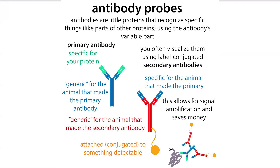This brings us to secondary antibody use. The secondary antibody is going to bind to the primary antibody, and it's actually the secondary antibody that's going to be labeled. This gives you signal amplification — you can have multiple secondary antibodies binding to that same primary antibody, allowing you to have an increase in signal. Whereas if you had a single label on a single primary antibody, you would have just one label per molecule of the thing you were looking for. With a secondary, you can have multiple secondary antibodies per primary antibody, giving you a higher amount of signal.